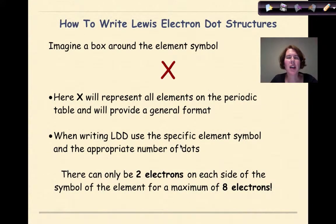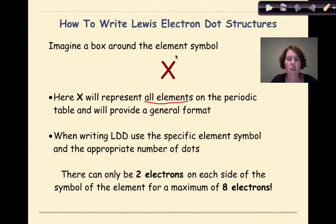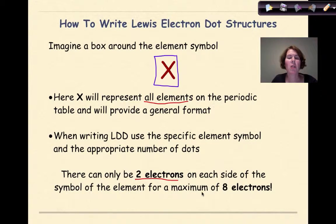How to write a Lewis Dot Structure. The first thing I want you to do is to imagine a box around the element symbol. This X here is representing all elements on the periodic table — a generic symbol to represent any element in a particular group. When we write Lewis Dot Diagrams, we always want to use the specific element symbol written appropriately, and the appropriate number of dots. There can only be two electrons on each side of the symbol for a maximum of eight electrons total.